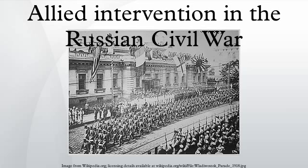Allied withdrawal: The Allies withdrew in 1920. The Japanese stayed in the maritime provinces of the Russian Far East until 1922 and in northern Sakhalin until 1925, when the Red Army's military success forced Japan's withdrawal from Russia.